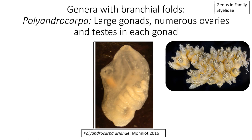Polyandrocarpa is very different in terms of its gonads — the gonads are large compared to the size of the animal, with numerous ovaries and testes in each gonad. In this picture of Polyandrocarpa zorritensis, you can see what look like fingers taking up a large section of the right and posterior side of the animal — long white finger-like structures — with numerous ovaries and testes inside each of those large gonads.